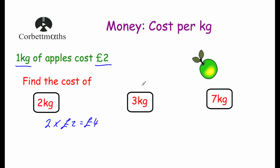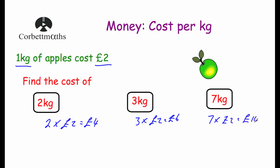If we want to find the cost of three kilograms of apples: one kilogram costs two pounds, two kilograms costs four pounds, three kilograms would cost six pounds. Or another way: three lots of two pounds equals six pounds. And for seven kilograms, seven times two pounds equals fourteen pounds. So we just multiply the cost per kilogram by the number of kilograms we want, and that gives us the total cost.